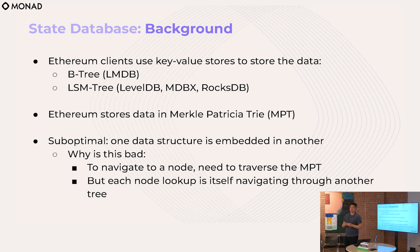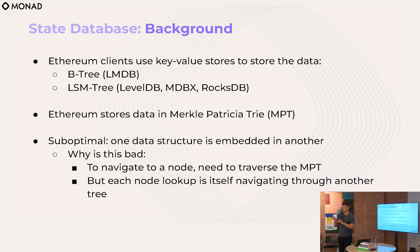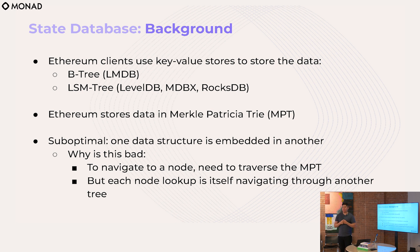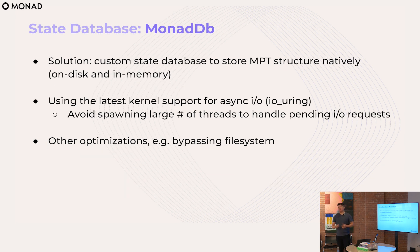There are a couple of problems. First, data in Ethereum lives in a Merkle tree, but that's being embedded inside another data structure — in LevelDB's case an LSM tree, in several others a B-tree. When you need to look up a value from the Merkle tree, you're effectively doing a quadratic lookup: you have to navigate down to a node in the Merkle tree, but visiting each node in that path also triggers a traversal into the underlying tree. It's really inefficient. Additionally, these databases don't support asynchronous I/O, so when we're doing transactions in parallel they block each other, going through a single pipe to look up values.